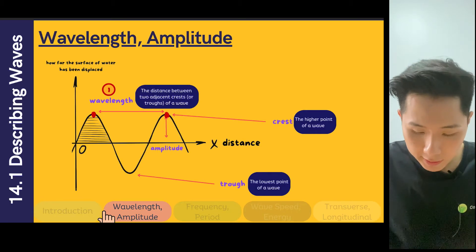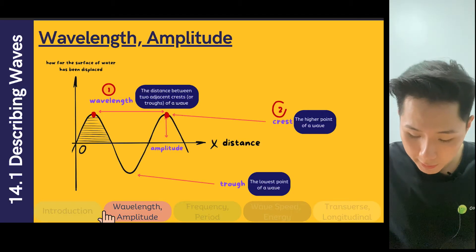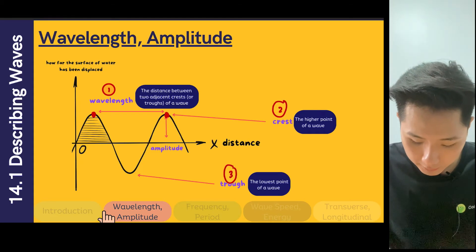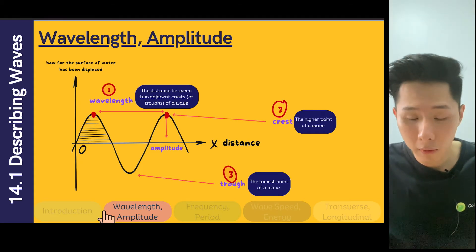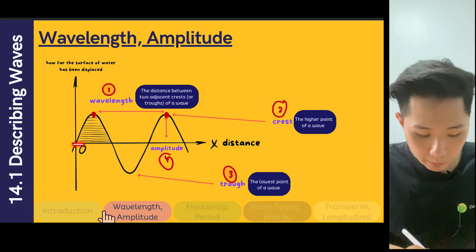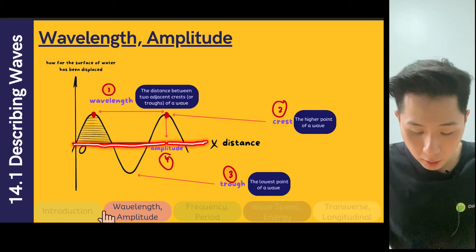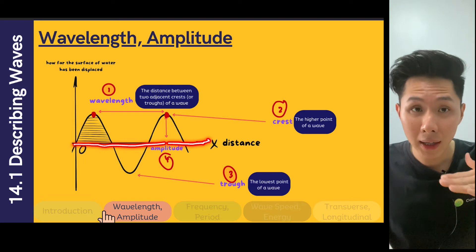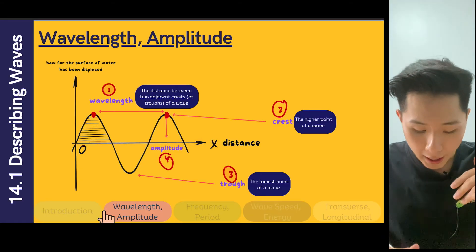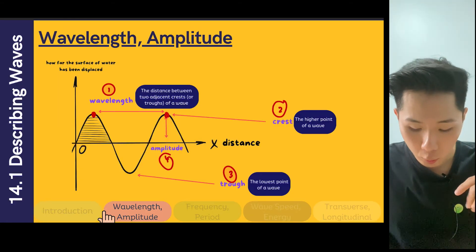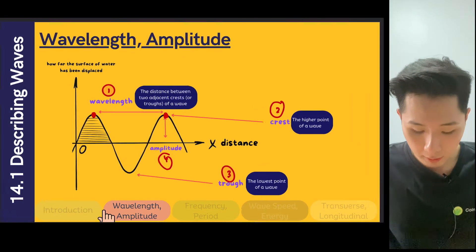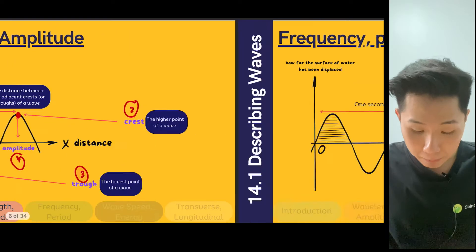The second term is the crest — the highest point. The lowest point on the other hand is called the trough. The fourth is the amplitude. The amplitude is the distance between the normal level — like when the water is not moving — and the crest or even the trough. So that's wavelength, crest, trough, and amplitude.